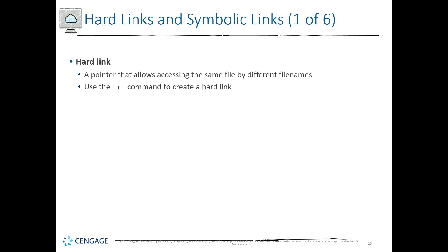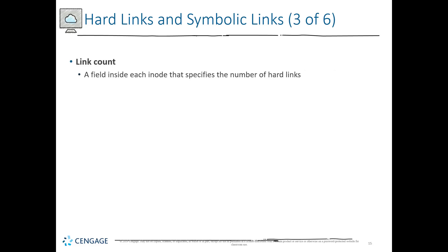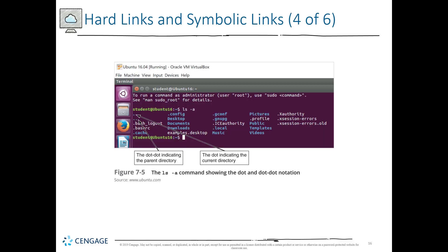There are hard links and symbolic links. A hard link is a pointer that allows access to the same file but by different names. You can use the LN command to create a hard link. A hard link may reference the same sector but by different file names. There is also a link count — a field inside each inode that specifies the number of hard links. Using 'ls -a' we can see a structure with dot-dot (parent directory) and a single dot (current directory).